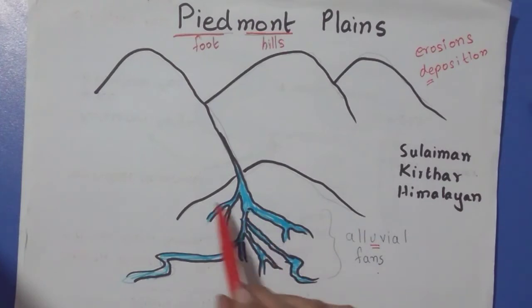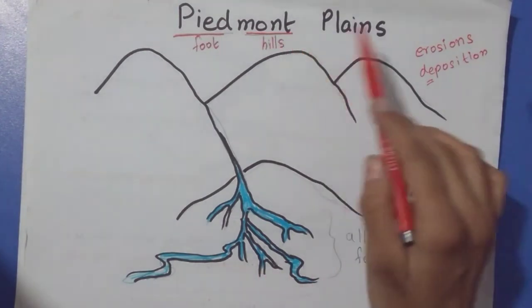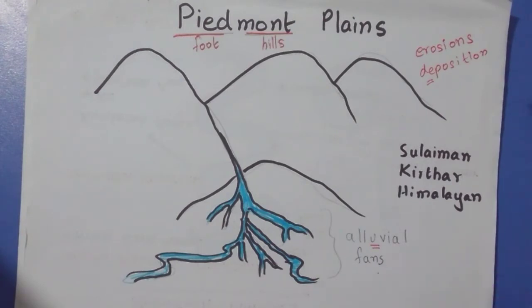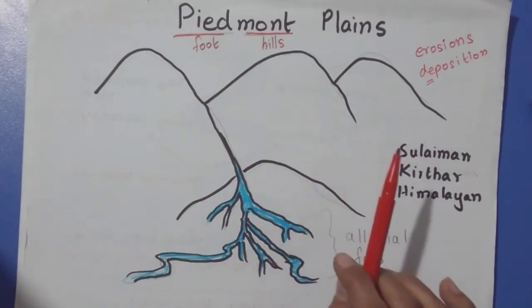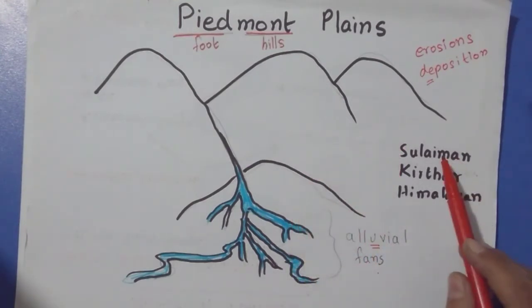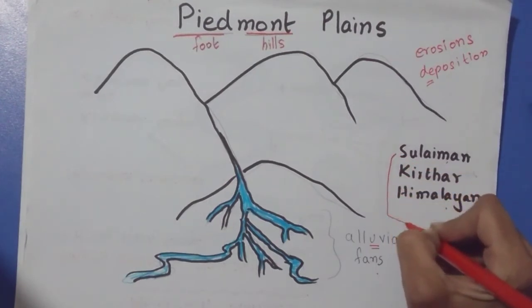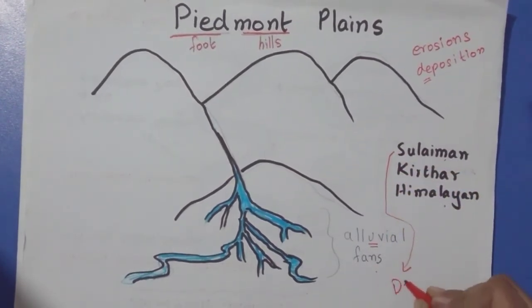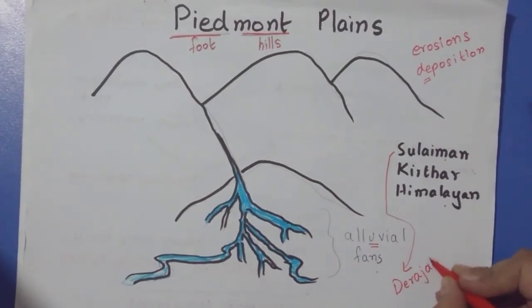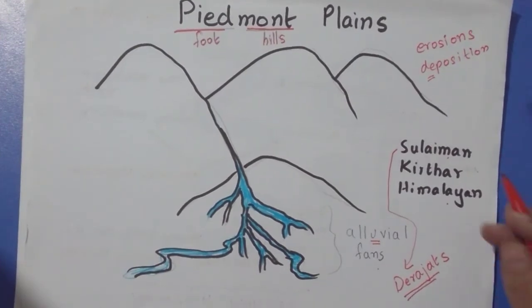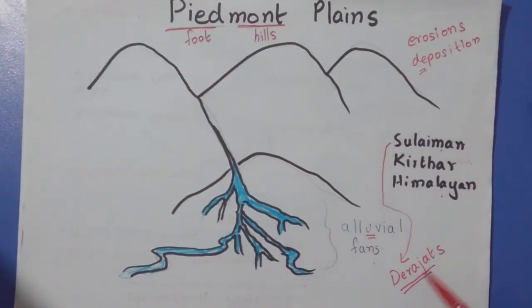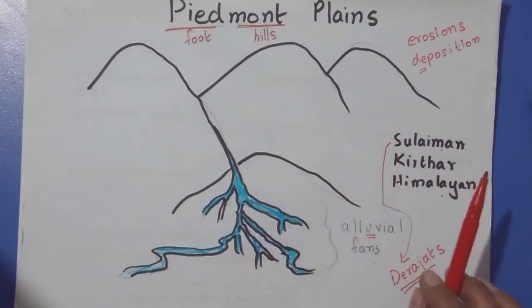This alluvium is a mineral, and when it deposits in these channels and between these channels, this area becomes extremely fertile—very good for agriculture. So remember that Piedmont Plains are very good areas for agriculture or the growth of crops. In Pakistan, they're located in the foothills of Suleiman, Kirthar, and the Himalayan ranges. In the Suleiman ranges, these Piedmont Plains are known by the name Derajat.